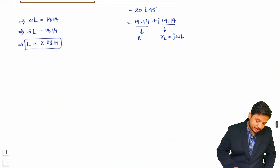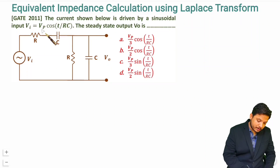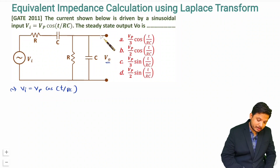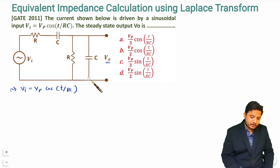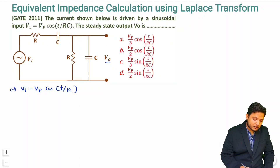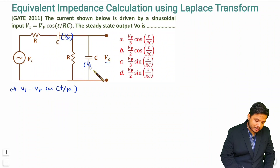Let us have one more interesting question to further resolve your understanding. In this question, the current is driven by a sinusoidal input vi = Vp cos(t/RC). The steady-state output is what we need to find. The output is taken across two terminals, and the circuit contains R and C components. Converting to the Laplace domain will allow us to identify v0.